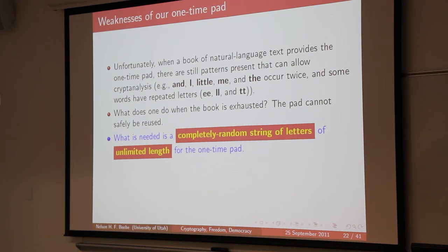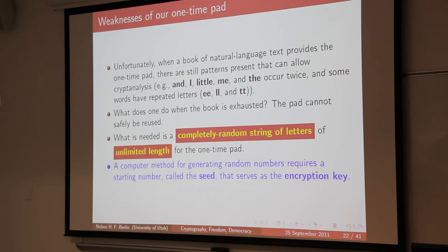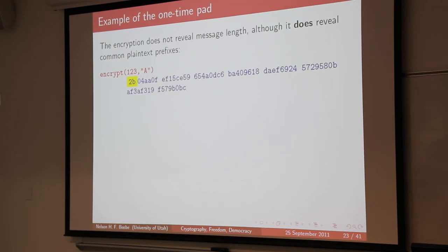The problem is that the good random numbers from physical processes like lava lamps are of no use here, because both sides have to have the same encryption stream. So instead you use an algorithmic method for generating random numbers, where the seed — the initial random number that starts the generator — is your encryption key.